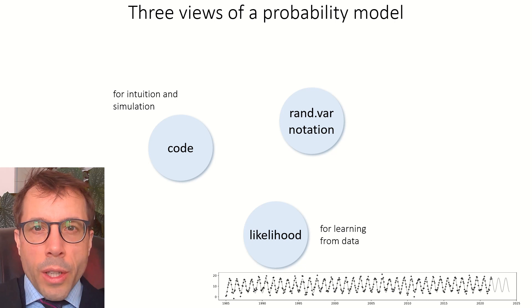And the likelihood view is what we need for machine learning, because it's the likelihood formula that we need to feed into our optimizer. And the random variable notation? Well, I think it's the cleanest and most concise way to describe a probability model. And more importantly, it's the bridge between code and likelihood.